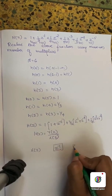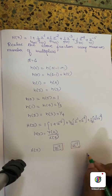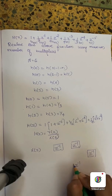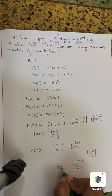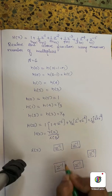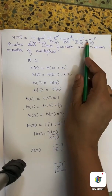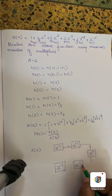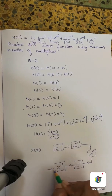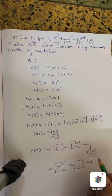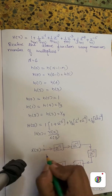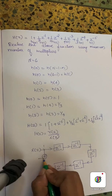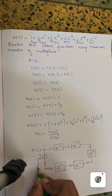We draw the structure using delay elements z raised to minus 1. The delay chain feeds the symmetric tap points. The multiply factor for the first group is 1, connecting the paired outputs.